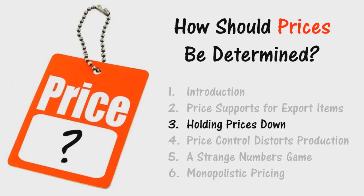If the government then tries to prevent this discouragement to the production of controlled commodities by keeping down the cost of raw materials, labor, and other factors of production that go into them, it must start controlling prices and wages in ever-widening circles until it is finally trying to control the price of everything. If it tries to do this thoroughly and consistently, it will find itself trying to control literally millions of prices and trillions of price cross-relationships, fixing rigid allocations and quotas for each producer and consumer — with controls extending in detail to both importers and exporters.